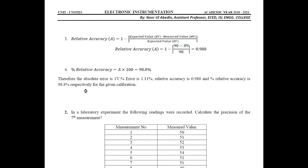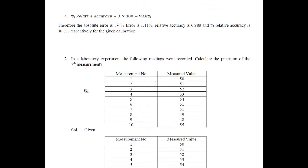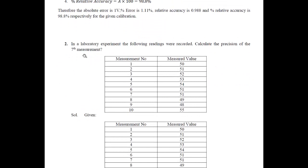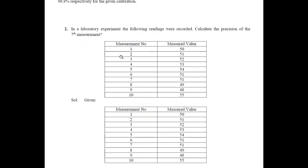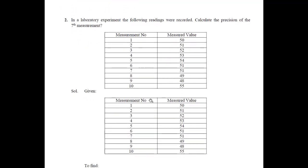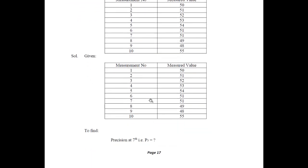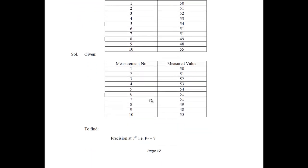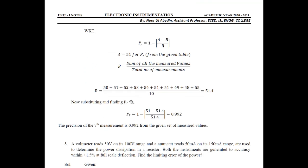Now we will proceed towards the second problem. In a laboratory experiment, the following readings were recorded — calculate the precision of the seventh measurement. Ten iterations, that is 10 measurements, are given along with their measured values. We need to find the precision at the seventh value.